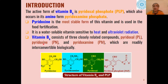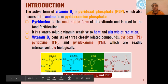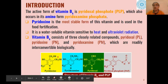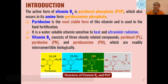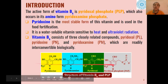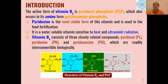Vitamin B6 consists of three closely related compounds: pyridoxal, where this part is the aldehyde; pyridoxine, where this part is CH2OH — so if we reduce the aldehyde this gives us pyridoxine, or if we oxidize this part it gives pyridoxal; and pyridoxamine, where the OH is replaced by NH2. All four forms can be interconverted very easily in biological systems.